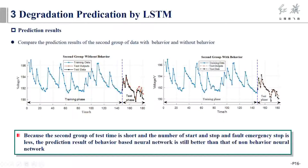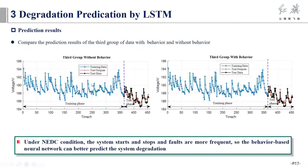In the second group of data, the operating condition is still steady state and we adjusted the air flow geometry. In the prediction effect, the behavior-based neural network is also better than the non-behavioral prediction method. The third group of durability tests adopts NEDC dynamic working conditions and its start-up, shutdown, and faults are more frequent. The voltage fluctuation is more severe, so the behavior-based neural network can better predict the system degradation.